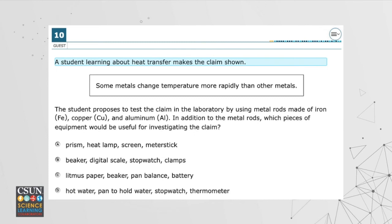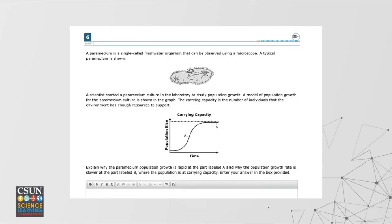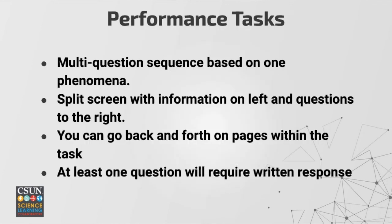Here's another release question — a constructed response question based on a phenomenon and a graph showing population over time. The question asks students to explain what's going on at two points in the graph: point A where the graph is rising rapidly, and point B where the graph is pretty much stable. It says explain why the paramecium population is growing rapidly at the part labeled A and why the population growth is slower at the part labeled B. Let's take a look at some of the rubrics for this and how it gets scored.